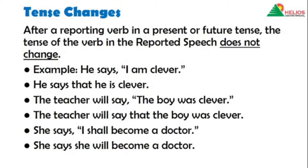She says, 'I shall become a doctor.' In indirect: She says she will become a doctor. Here we haven't used the word 'that,' but we have made changes in the pronoun — 'I' becomes 'she' — and 'shall' becomes 'will.' 'I' is always used with 'shall' as it is the first person, and 'will' can be used with all. The entire dependency is on how determined you can be, so determination is important when you use 'will.'